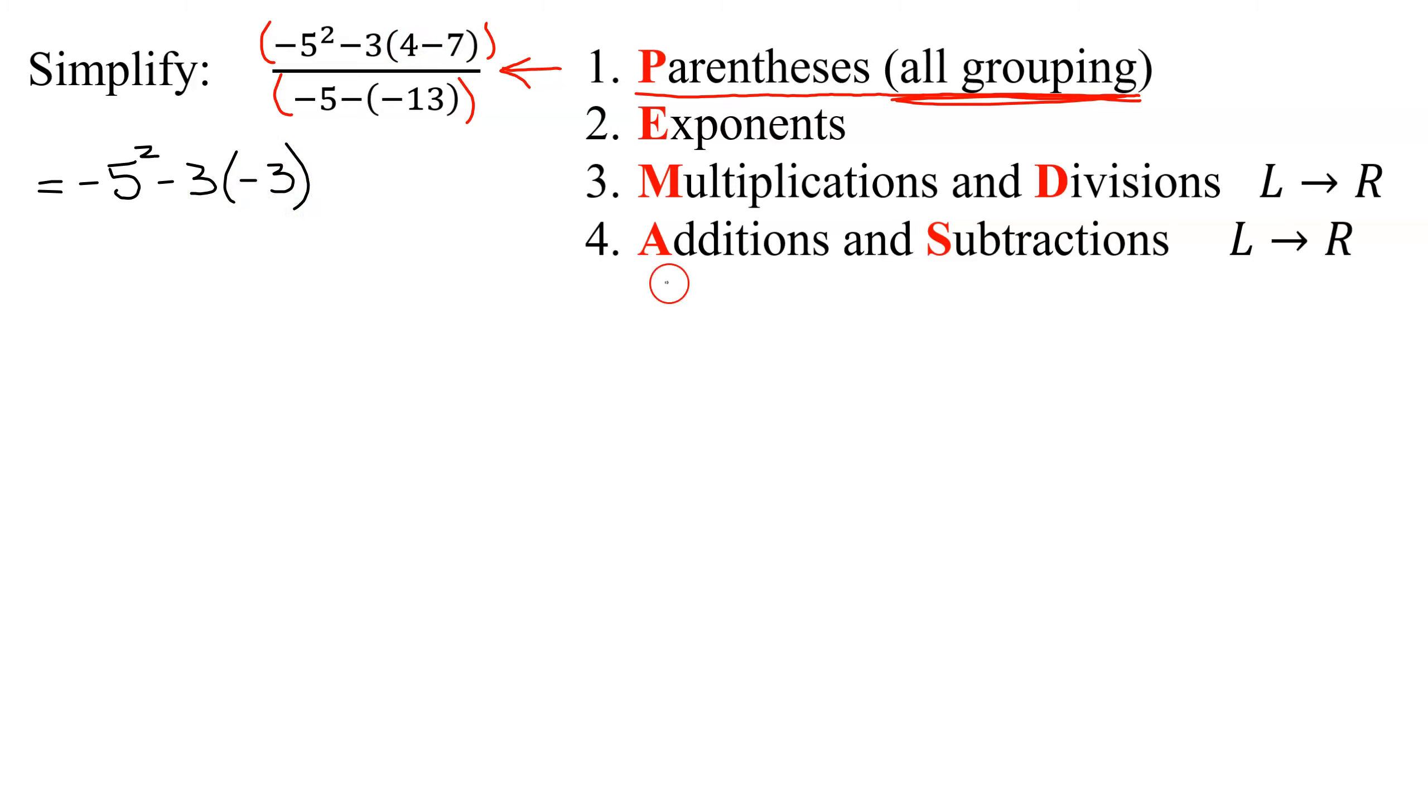And remember, how did I get that? 4 minus 7 can be thought about as 4 plus a negative 7. Adding integers of opposite signs, you take the sign of the bigger one and subtract. 7 minus 4 is 3.